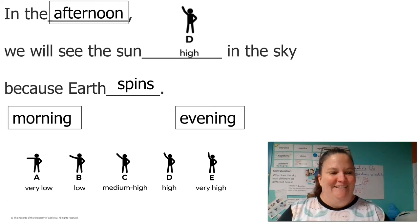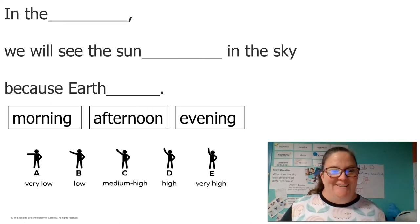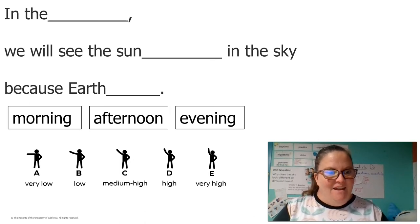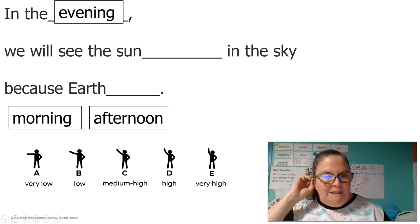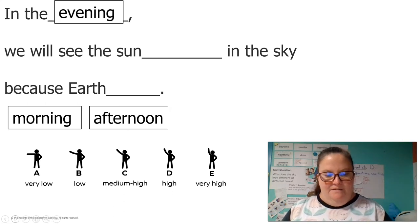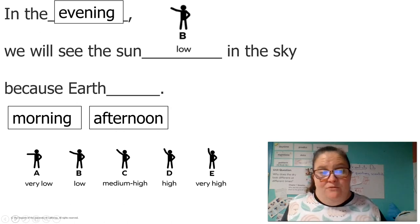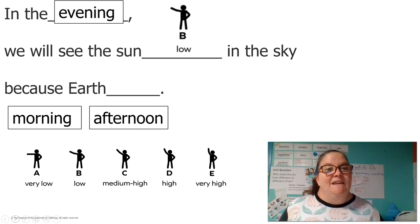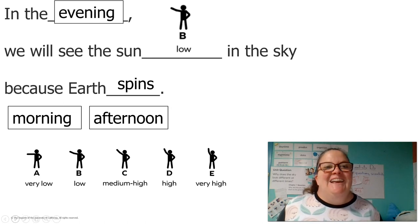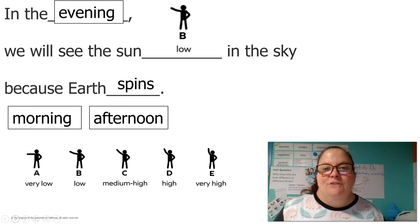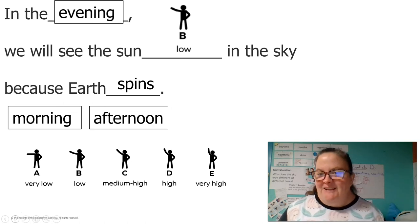One more — let's do the evening. This is our last one everybody, and then we're done for the day. In the evening, right before we go to bed, we will see the sun — very low, low, medium, high, or very high? I said low; you might have said very low too, and that's okay. In the evening, we will see the sun low in the sky because earth spins. Nice work, you guys. Take care, and I'll see you next time. Bye.